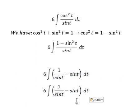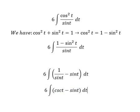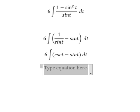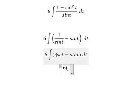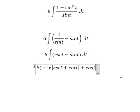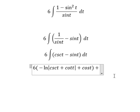Next, this one is about cosecant of t. And now we have the final answer. The integration of this one we have negative ln of the absolute value of cosecant t plus cotangent t, and the second one is positive cosine t, and I will put C.